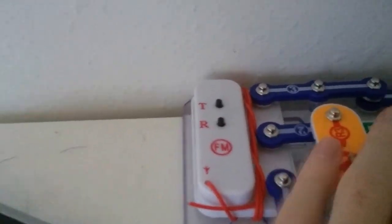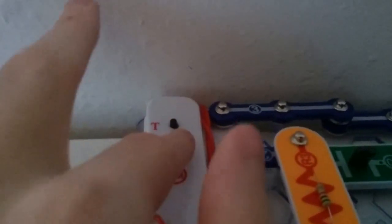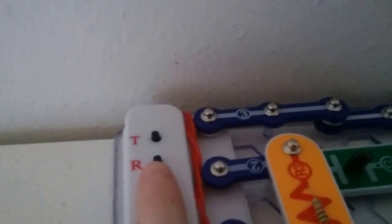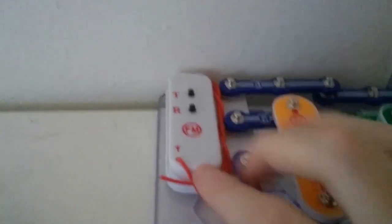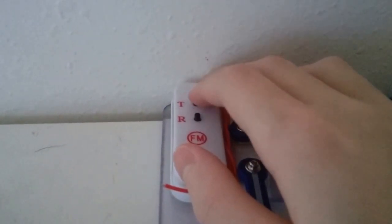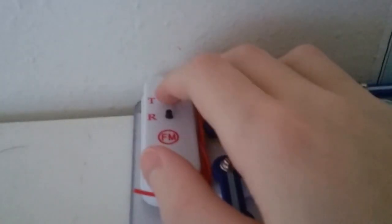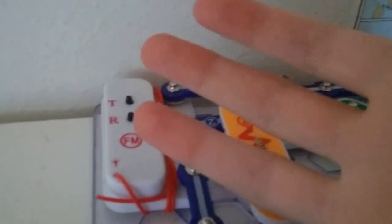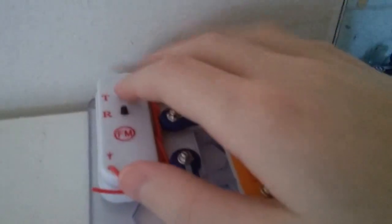How this FM radio works is you press this R button and it resets it. Then it isn't tracking anything. But when you press this T button, it starts looking for a radio, or it stops tuning into the one that's on and tunes into another one.